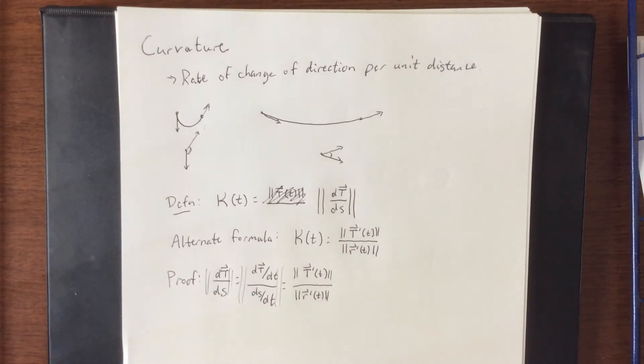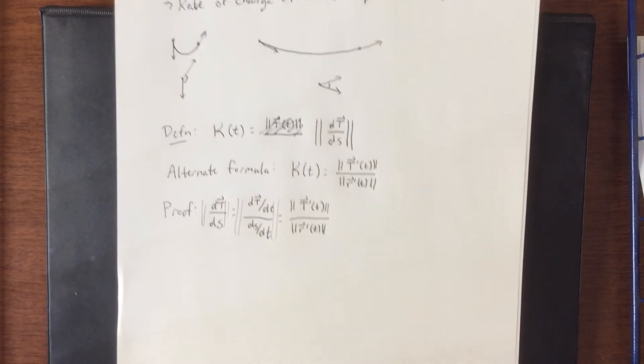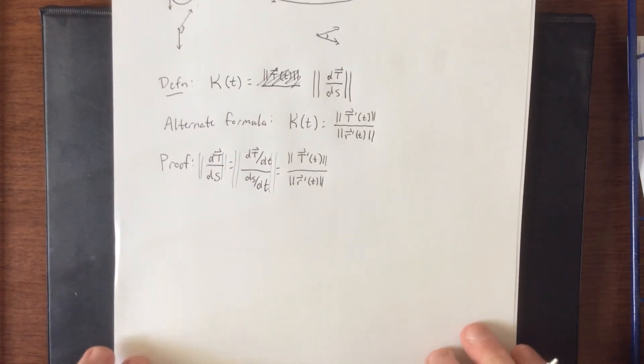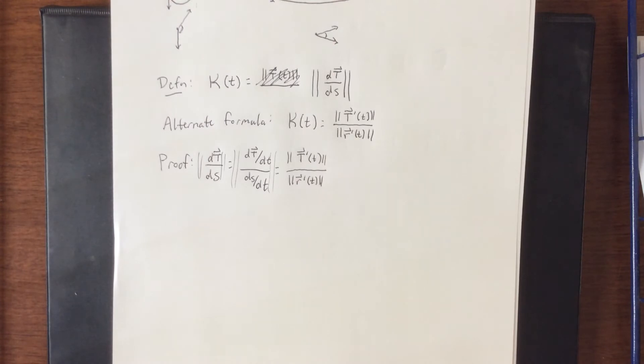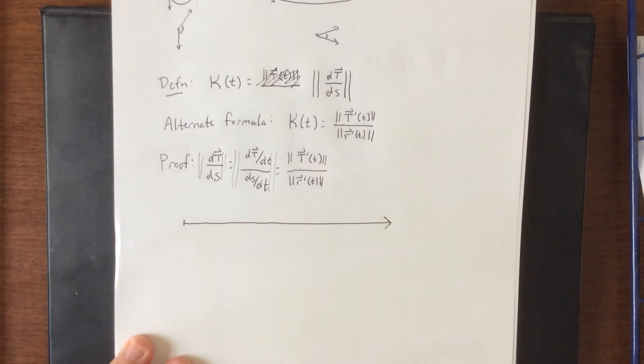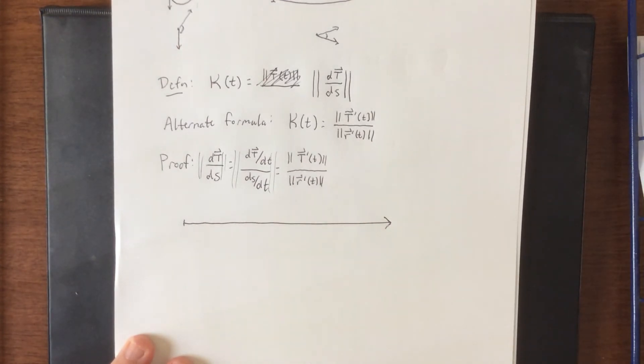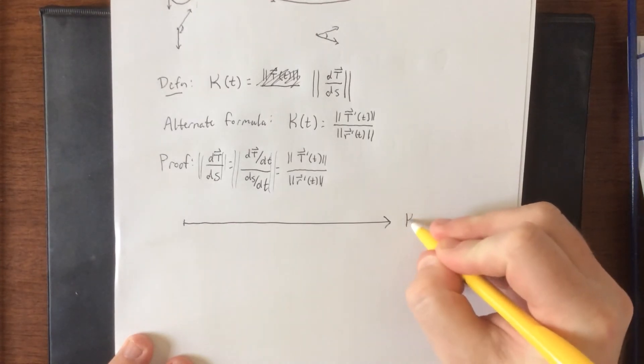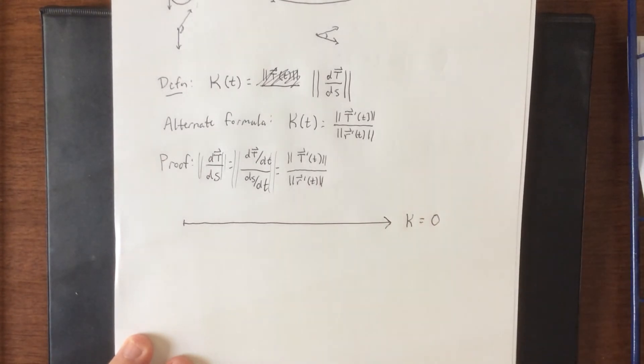The way that I try to describe curvature in terms of a physical quantity is, imagine that you are driving a car. If you do nothing to the steering wheel and you just hit the gas, ideally what should happen is you would drive in a straight line. So if something is straight, its curvature is defined as zero.